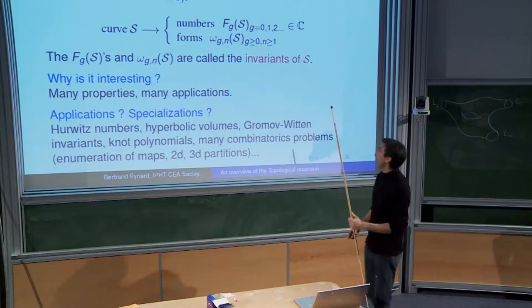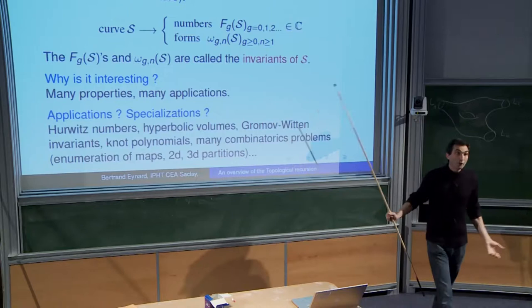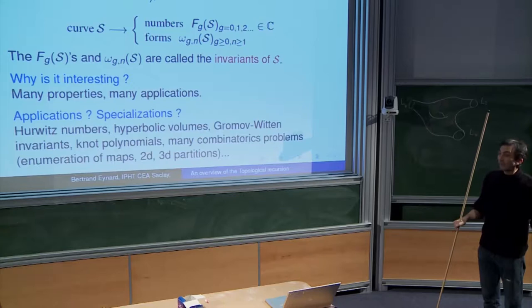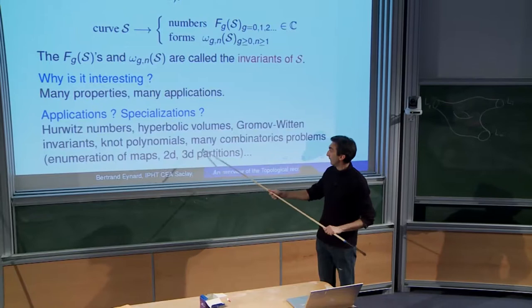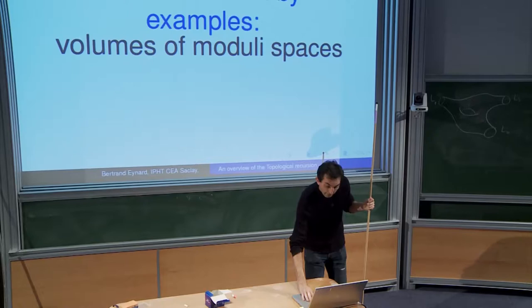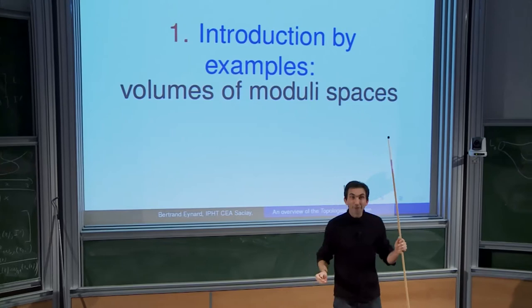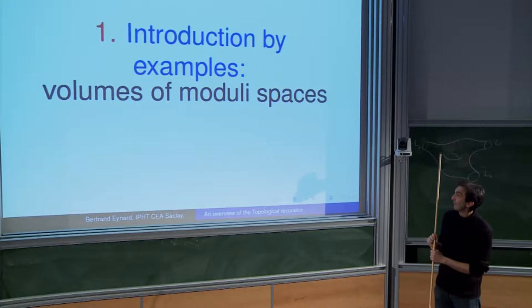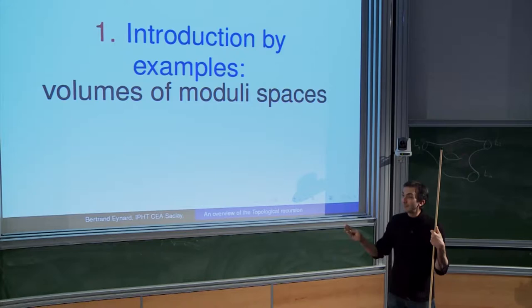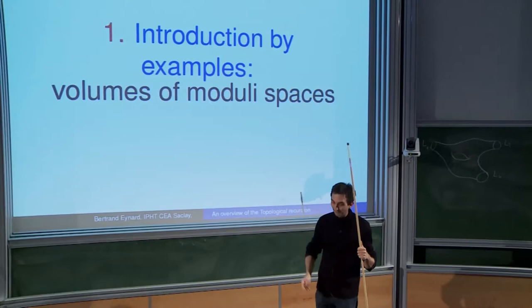Among the applications there are Hurwitz numbers, hyperbolic volumes, and Gromov-Witten invariants. A very recent thing is knot polynomials — for instance, the Jones polynomial. Why it appears in that story is not known, it's only a conjecture, but we would like to understand it. There are also many other problems like counting 2D or 3D partitions which are related to that. Let me introduce it really by a very simple example with an actual computation. This topological recursion is now taught in many places in master classes — even in China and Australia.